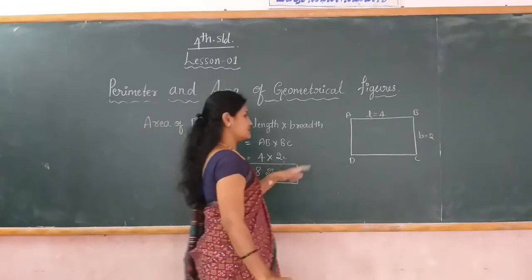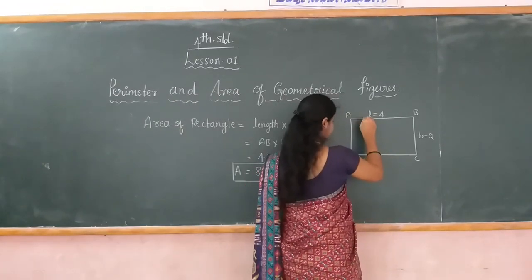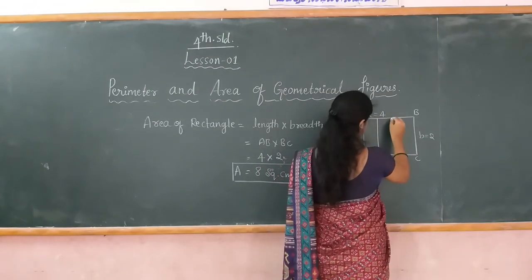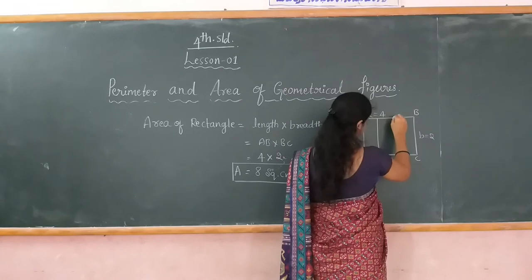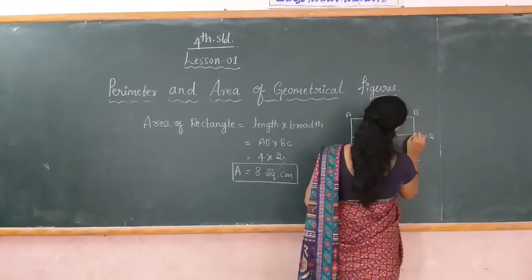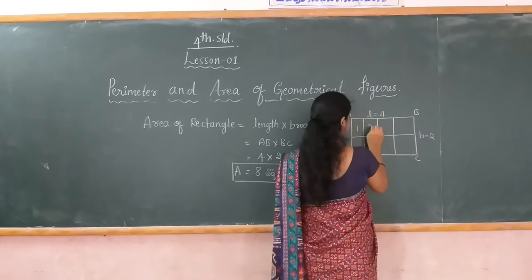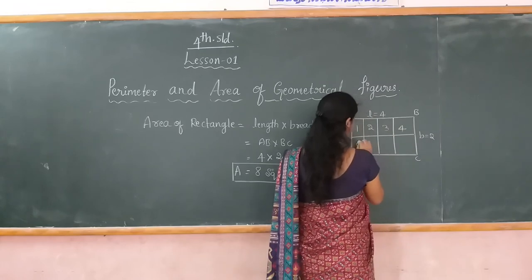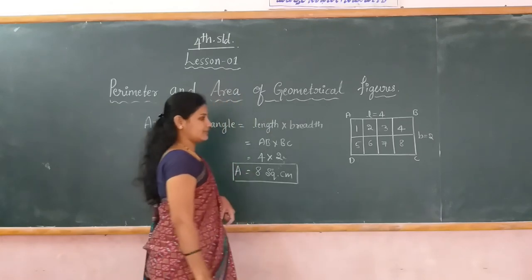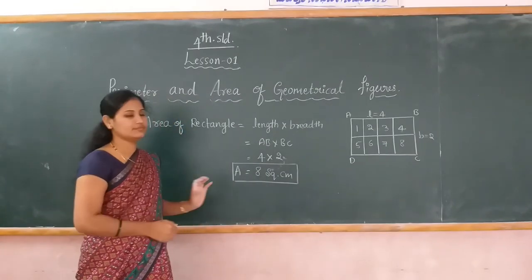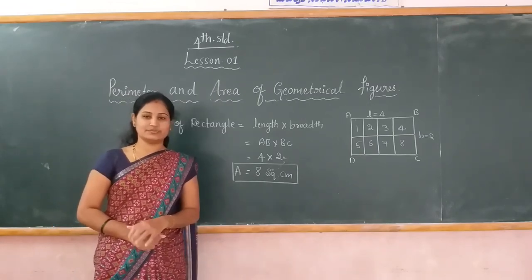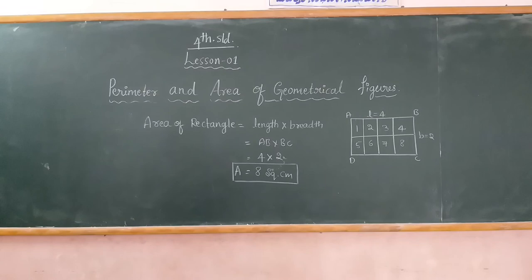How many squares are there? 8 squares are present in this region. This is the area of the given rectangle. These are the methods to find the area of the plane figure. Thank you.